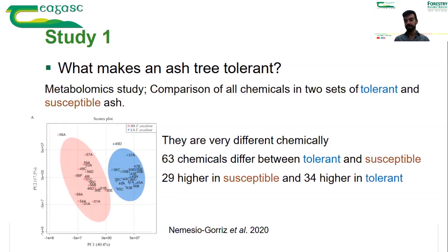We did a metabolomics analysis, which is a full biochemical profile for each of these samples, and then compared them. In a graph, the blue samples representing tolerant trees and the red samples representing susceptible trees do not mix — they actually belong to different clusters, separated because there are a number of chemicals that differ, up to 63 that we identified.